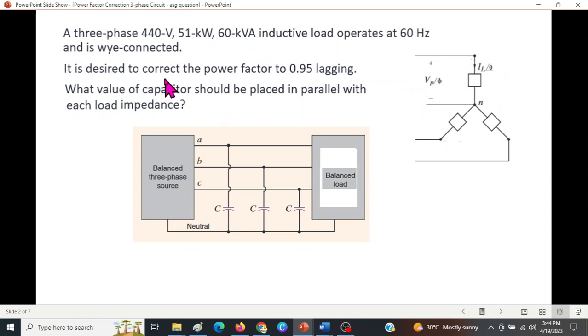It is desired to correct the power factor to 0.95 lagging. What value of the capacitor should be placed in parallel with each load? I hope you have learned already that inductive load creates a lagging power factor, and to reduce that lagging power factor we use capacitors in parallel with the load.